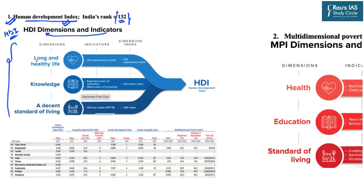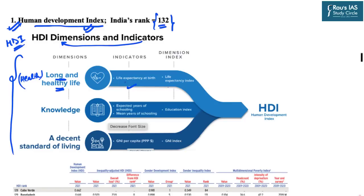There are three broad categories for HDI. One is related to health — long and healthy life — measured by the life expectancy index, calculated on the basis of life expectancy at birth. The second is related to education or knowledge, with two sub-indicators: expected years of schooling and mean years of schooling. The third is a decent standard of living, measured by gross national income per capita in terms of purchasing power parity, giving the GNI index. When health, education, and income are combined, we get the Human Development Index.